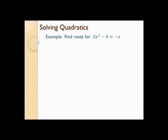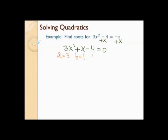Hi there, it's me, Mr. B. Let's find the roots for 3x squared minus 4 equals negative x. Some of these you could try other methods — we're just going to concentrate on the quadratic formula for now. The first thing I want to do is write it in standard form. I'm going to add x to both sides, so I end up with 3x squared plus x minus 4 equals 0. So a is 3, b is 1, c is negative 4.